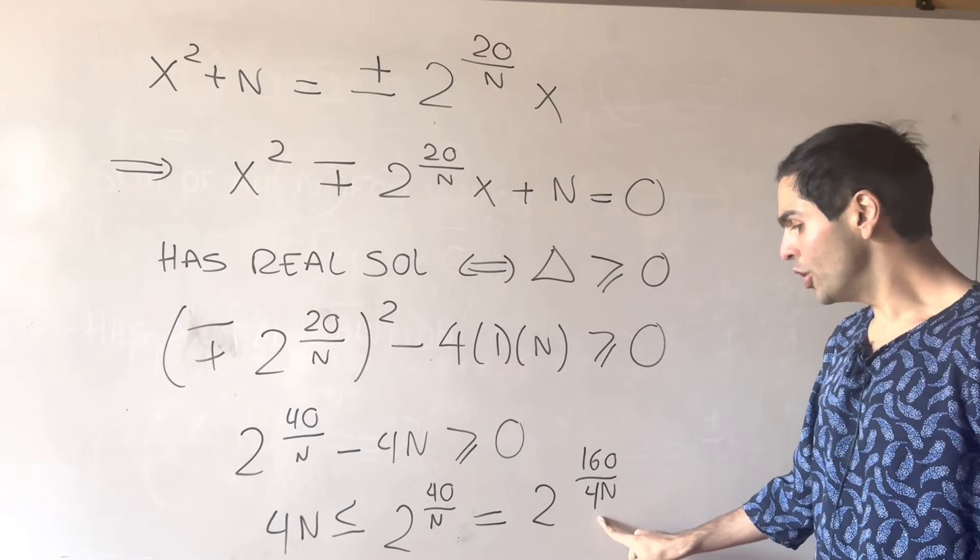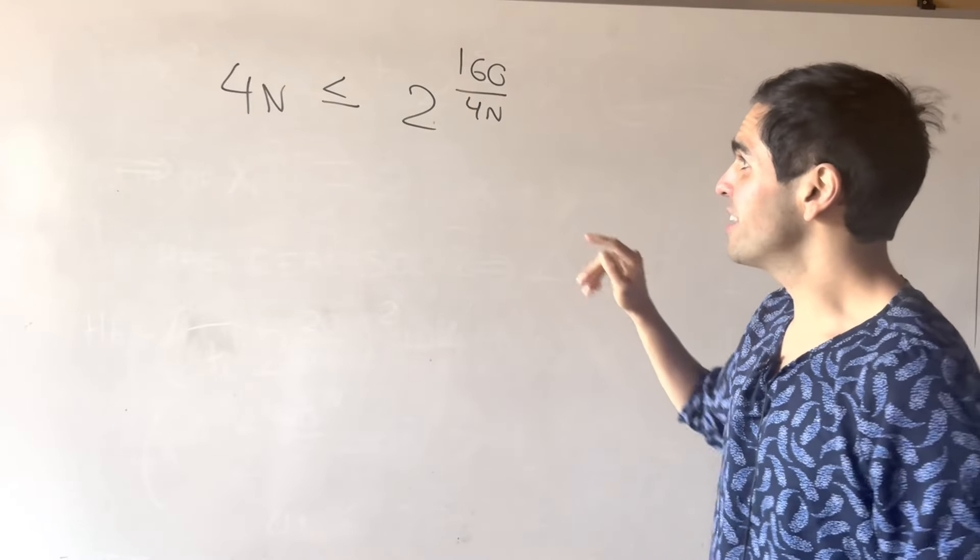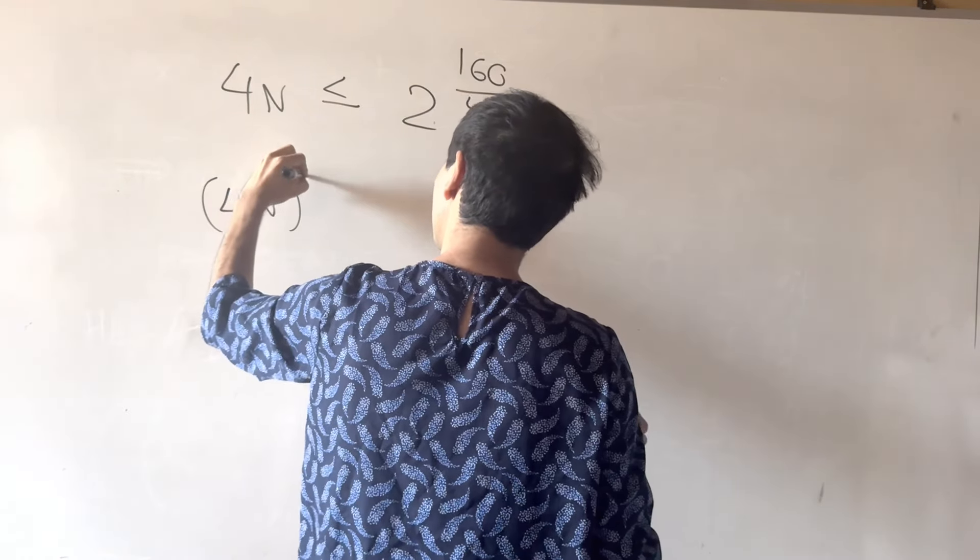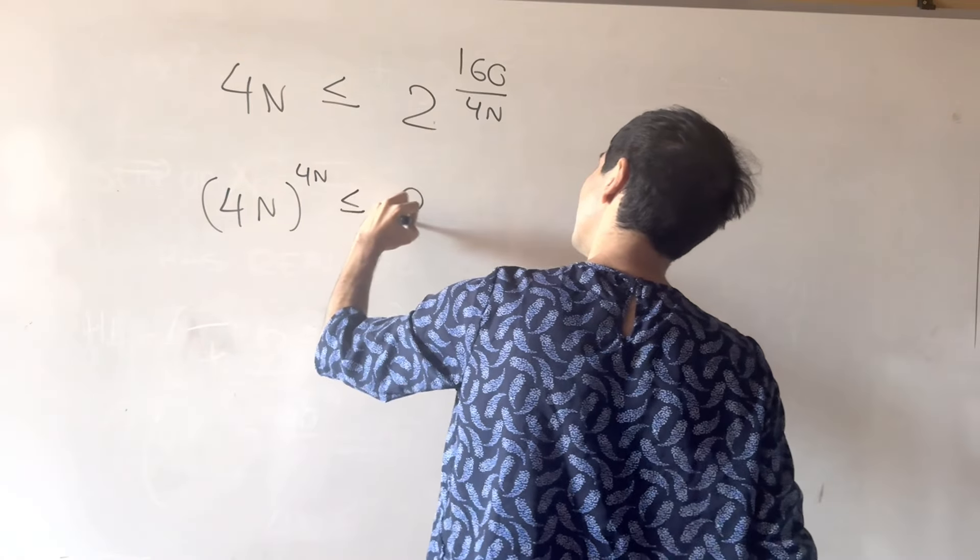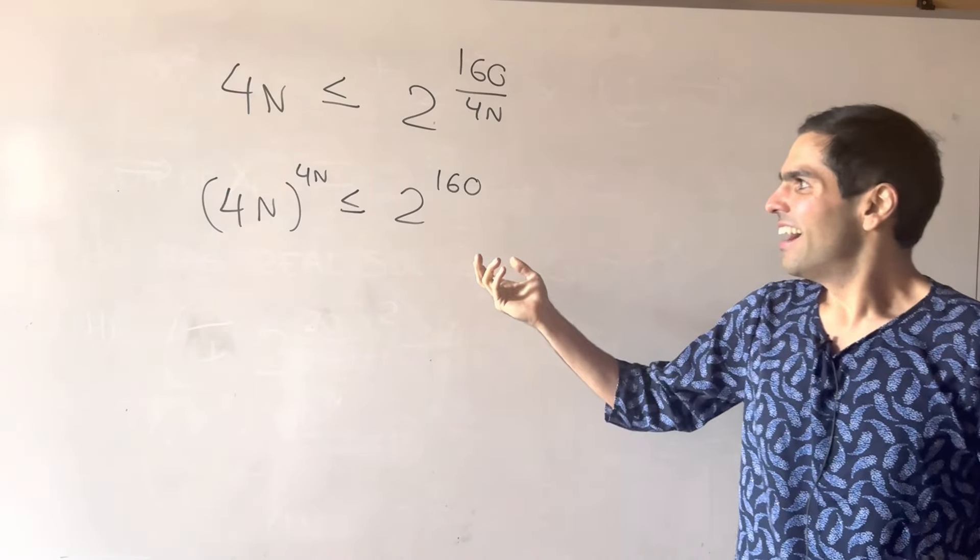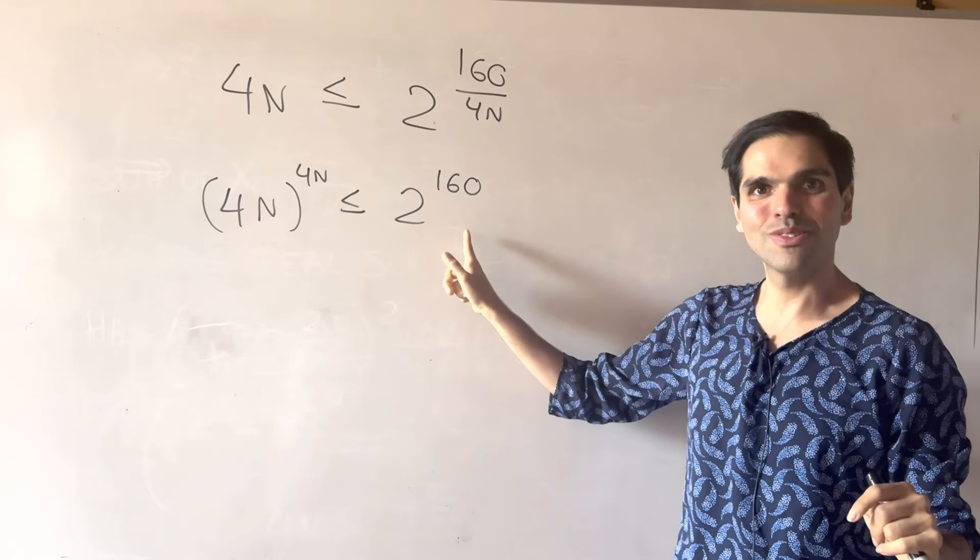So, this is 2^(160/4n). And the reason is we have 4n on the left-hand side and now 4n on the right-hand side. And then, what we can do, we can raise this to the 4n power. So, now what we get, raise it to the 4n power and you get (4n)^(4n) is less than or equal to 2^160.